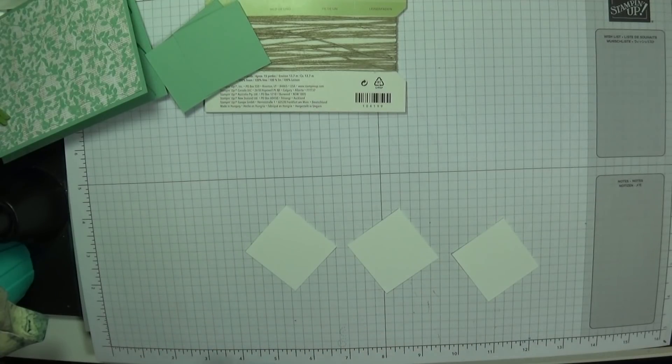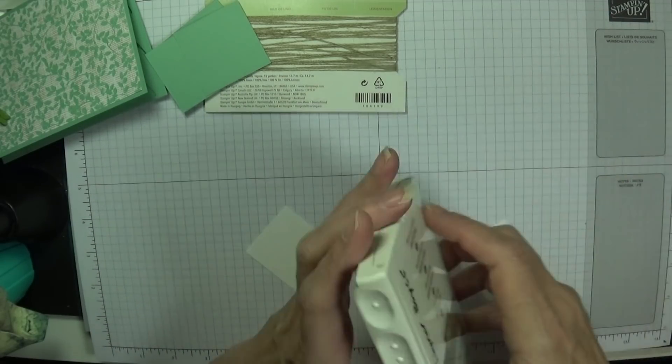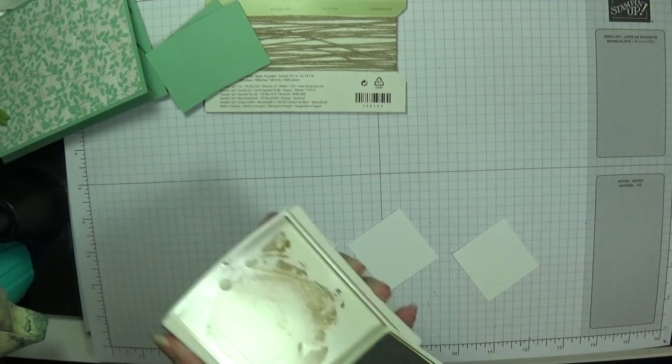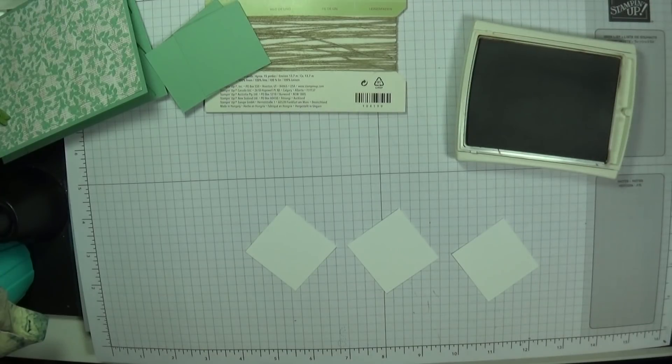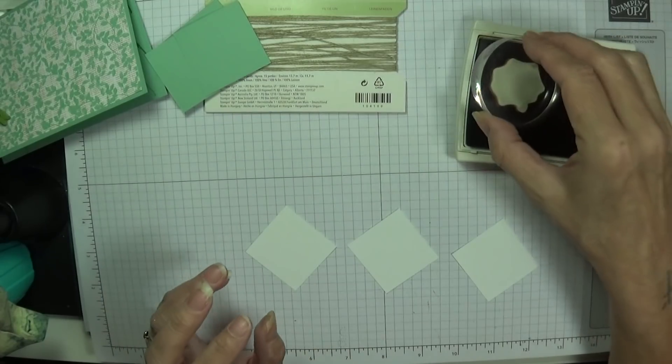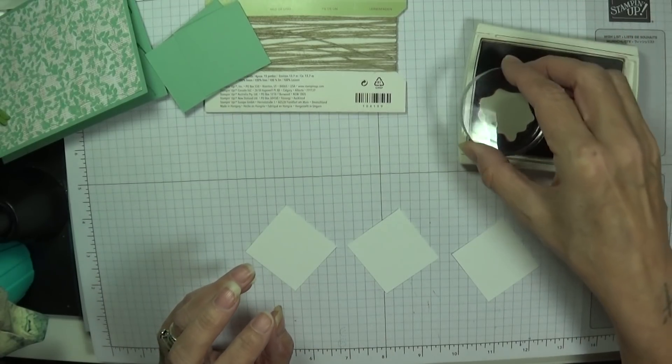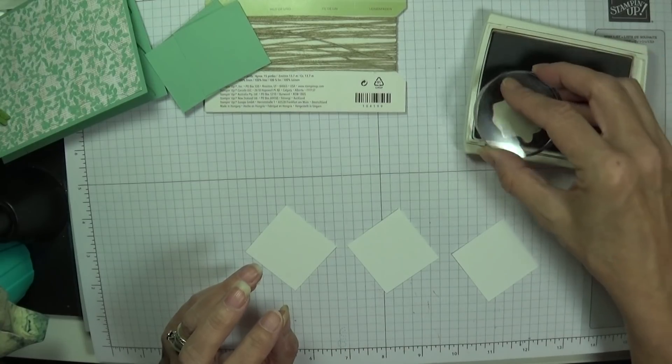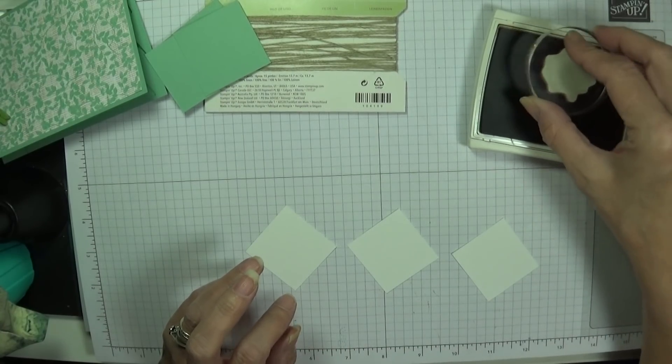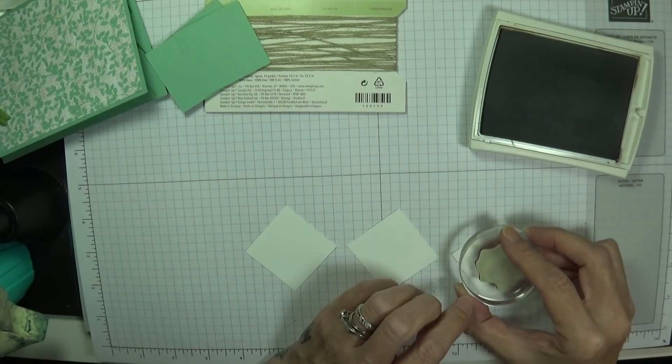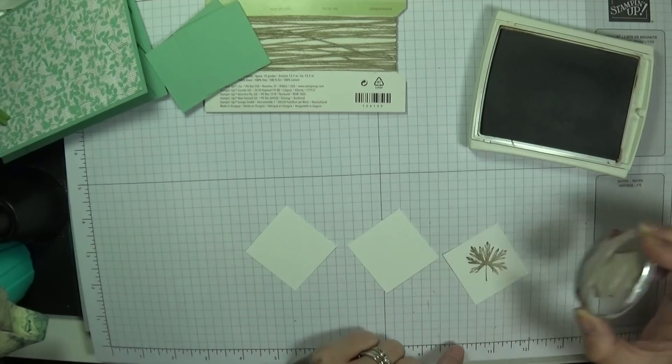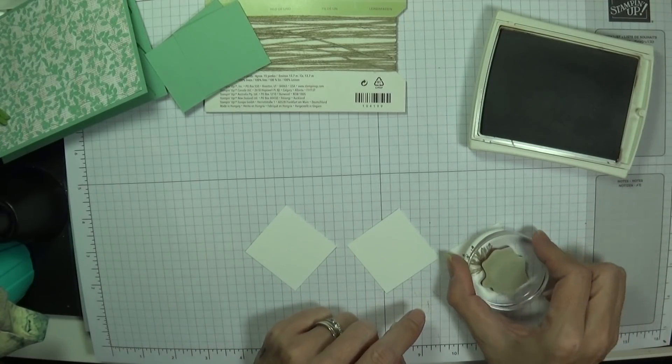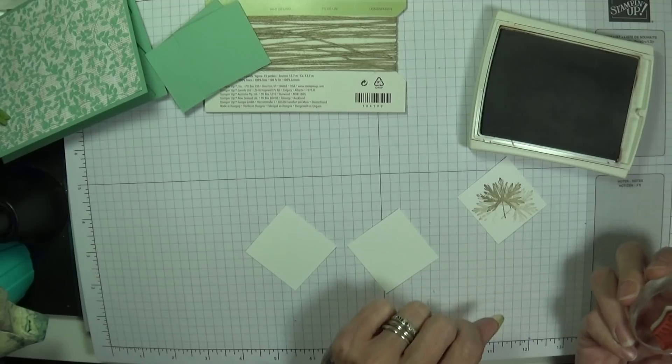So I will stamp them as a diagonal. And I'm using, oh, do you know what I'm going to do with this one? I'm not going to use the Blackberry Bliss on this one. I'm going to use Soft Suede, a little bit more subtle. Mind you, it does look nice actually. So I'm going to stamp, stamp, and stamp. Isn't that cute? Love it.